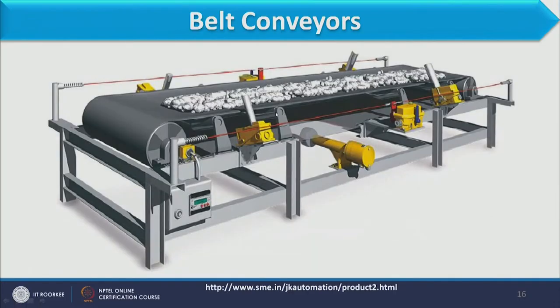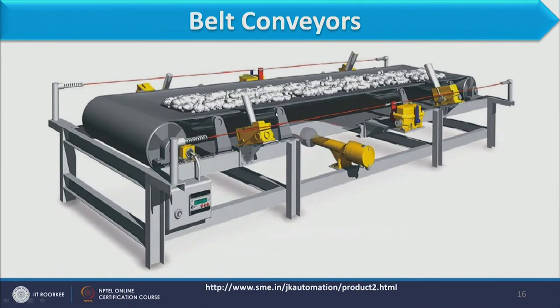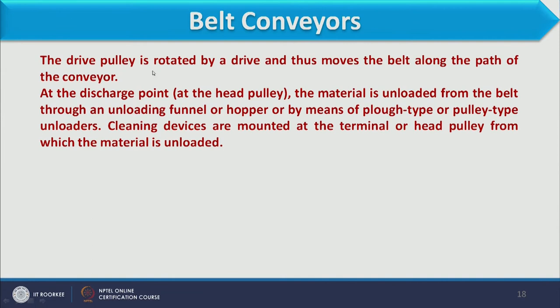Return-side rollers are spaced at greater intervals than the carrying-side rollers, because on the return path there is no material, so the belt shape is easier to maintain. The drive pulley located at each end is rotated by a drive, moving the belt along the conveyor path.